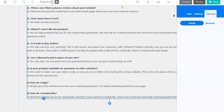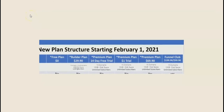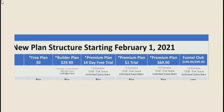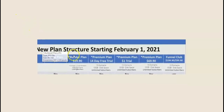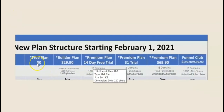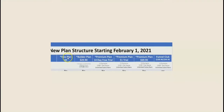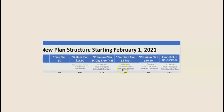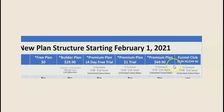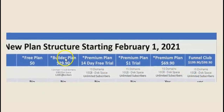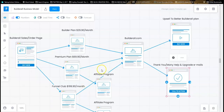I'll be doing a couple of videos comparing Builderall with other platforms, so take a look at those videos. Now, the reason I brought up the Amway multi-level marketing comparison is I want to show you the difference — or similarity — between the two models. Looking at the new plan structure from February 1st, 2021: there's a free plan, a Builder Plan that's very limited and only for a short period, same with the dollar trial at 14 days, then Builder Plan at $29.90/month, Premium Plan at $69.90/month, and Funnel Club at $199.90/month.